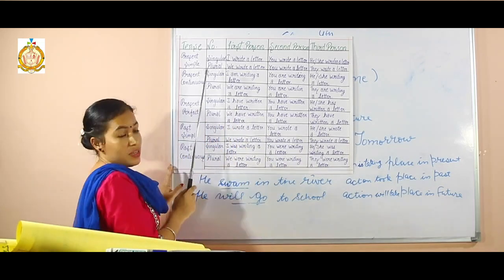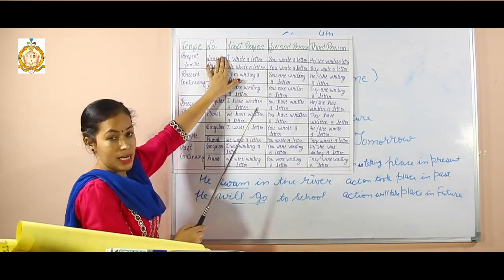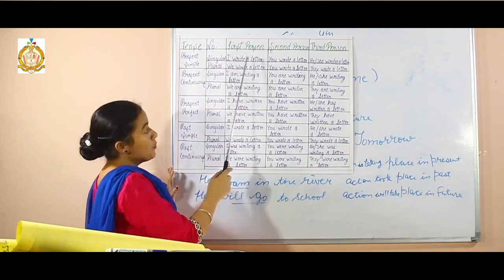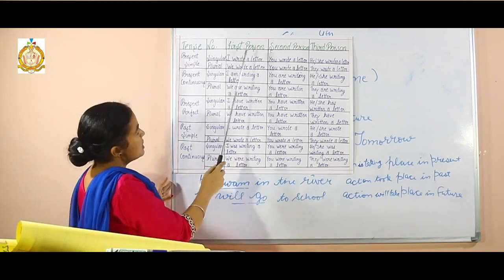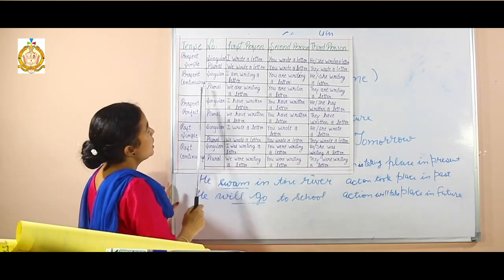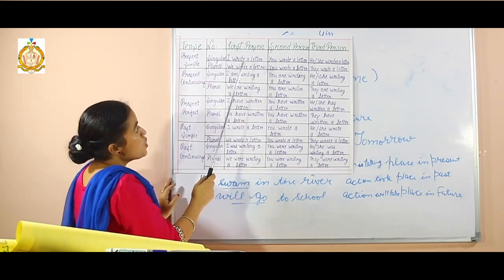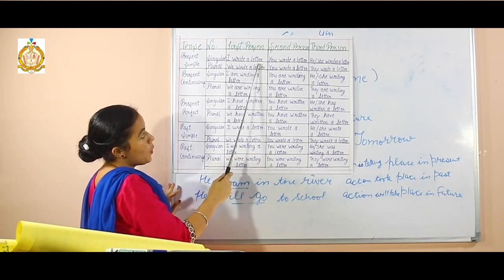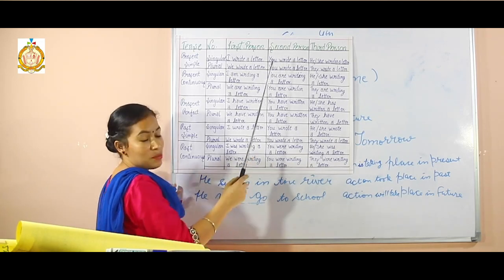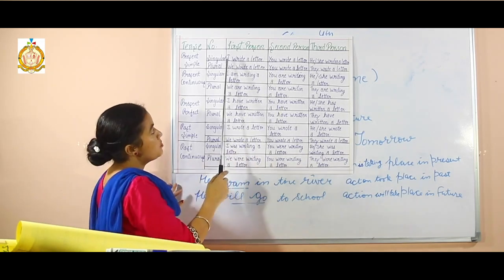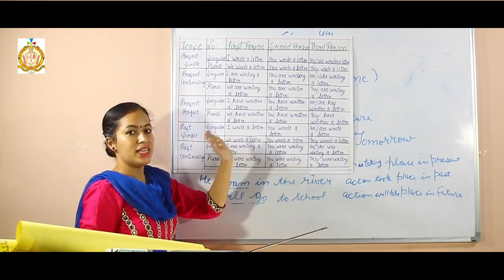Now first of all we will do simple present tense. Here we have first person, second person, and third person. In simple present tense: first person is 'I', second person is 'you', and third person is 'he', 'she', 'they', or 'it'.